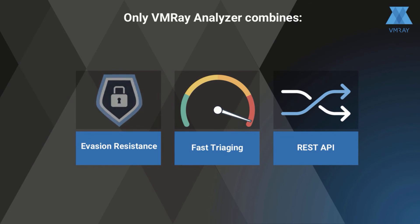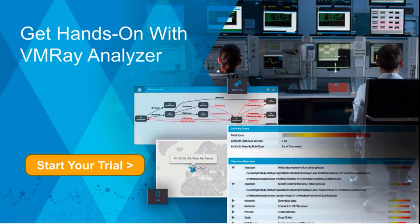Only VMRay Analyzer combines evasion-resistant dynamic analysis and fast triaging of known threats with a robust REST API and a broad range of third-party connectors. This makes VMRay Analyzer the tool of choice for DFIR specialists looking for a threat analysis and detection solution that gives them an edge. For more information, visit www.vmray.com.